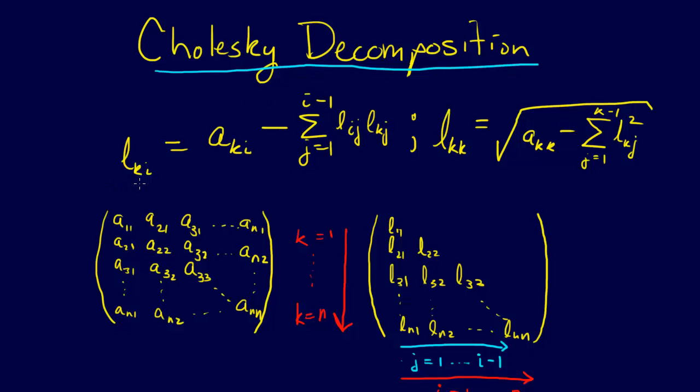So, we have L_KI, the KI element is equal to A_KI minus the sum from J equals 1 to I minus 1 of L_IJ L_KJ. And then we have a second equation, L_KK equals the square root of A_KK minus the sum from J equals 1 to K minus 1 of L_KJ squared.